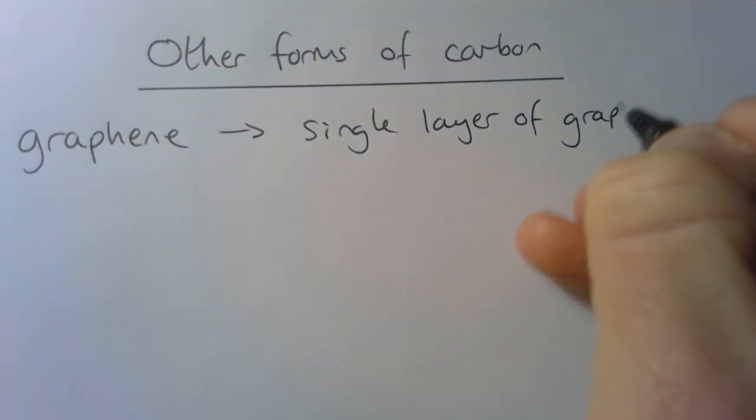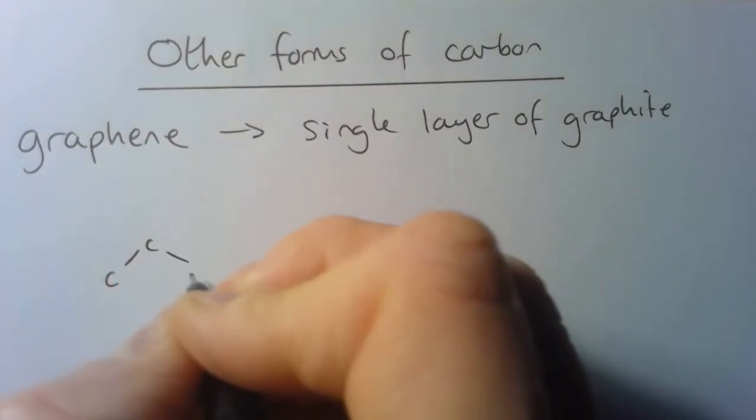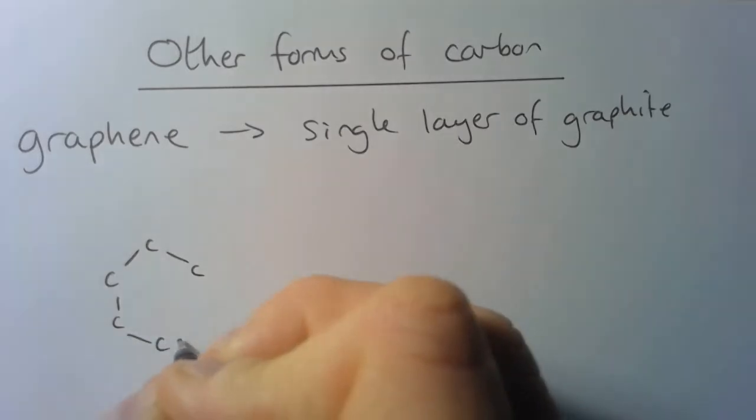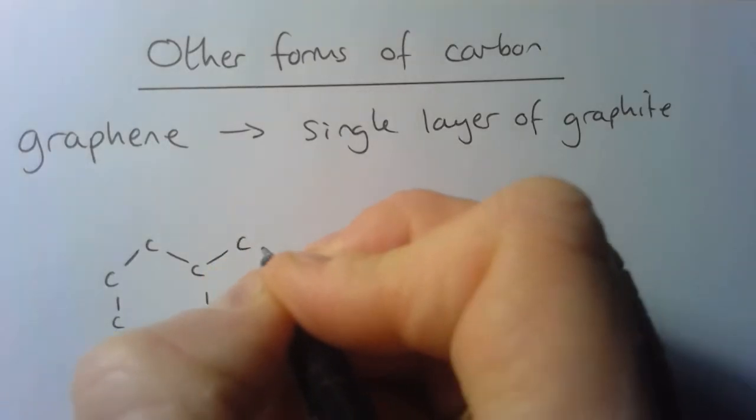We've already seen the structure of graphite. But if we remind ourselves about it, then in graphite we've got a giant covalent structure, so we've got lots of covalent bonds.